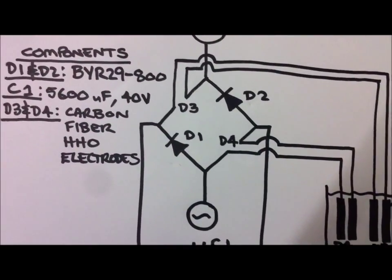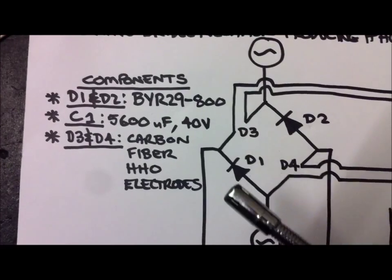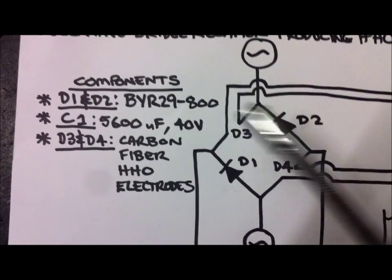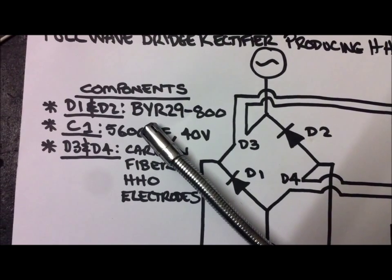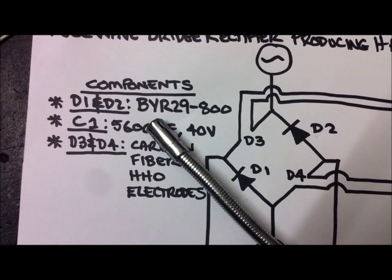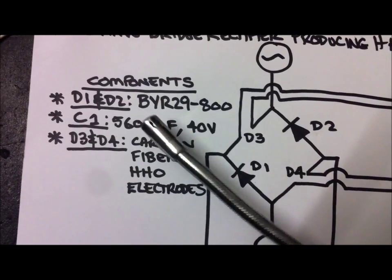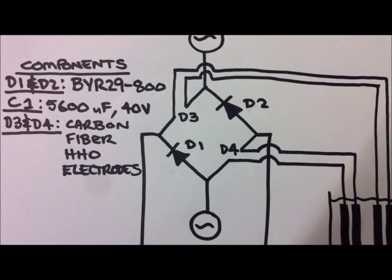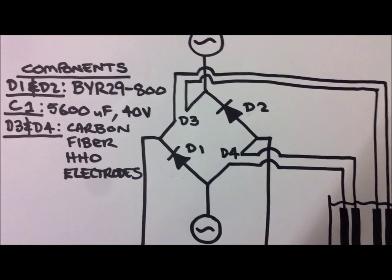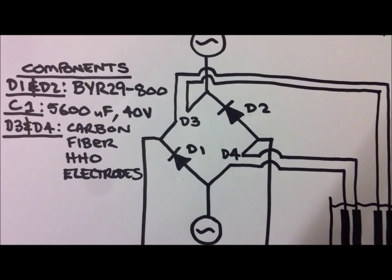The other thing that I've done is I have replaced D1 and D2 with some more high-powered diodes. So these BYR 29800s. They're rated to 8 amps but that depends on the circuit. I think we could easily get about 10 amps out of them.